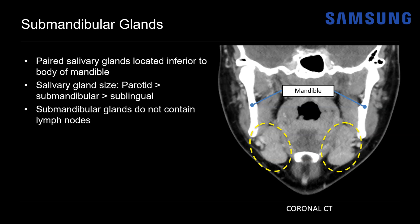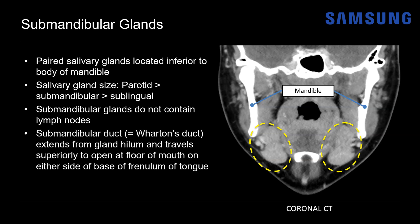Unlike the parotid glands, the submandibular glands do not contain lymph nodes. A duct extends from the submandibular gland — also known as Wharton's duct — traveling from the gland hilum superiorly to open at the floor of the mouth on either side of the base of the frenulum of the tongue. We don't typically see this on ultrasound unless it's abnormally dilated.